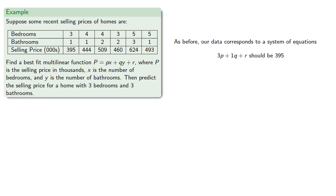And similarly for four bedrooms, one bathroom, our formula should predict a price of 444, and so on for all the rest.